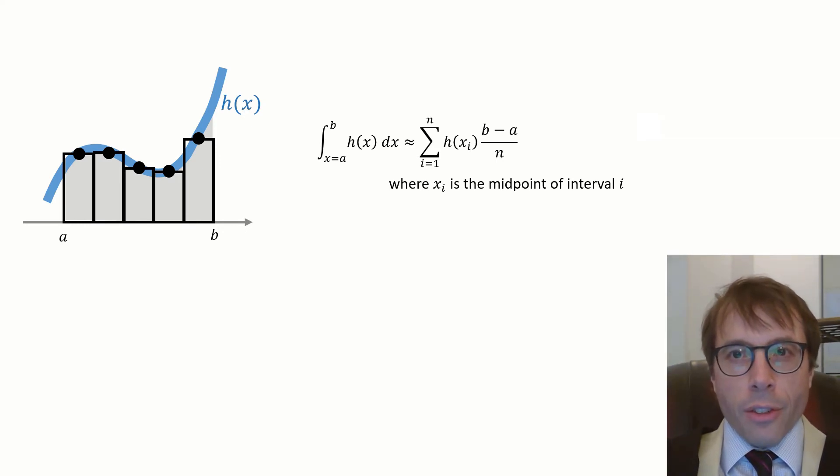Split the x-axis into intervals. Draw a rectangle for each interval. The width of each interval is b minus a divided by n because there are n of them, and so the area of each rectangle is h of xᵢ times the width, where the xᵢ are the midpoints of each of the intervals. So summing up the areas of each of the rectangles tells us the area under the curve. The larger n is, the better the approximation.